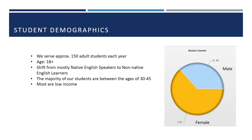The majority of our students are between the ages of 30 and 45, and most are low-income. However, there are currently no income requirements for participating in the program. Each day, new students enroll in our program, and therefore each day our demographics do shift slightly. The information presented here is a snapshot of our current student demographics.